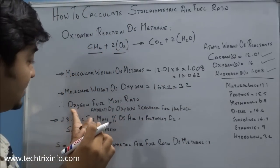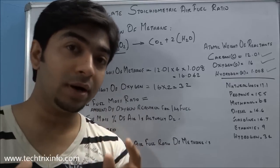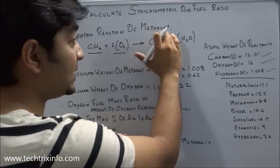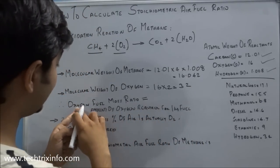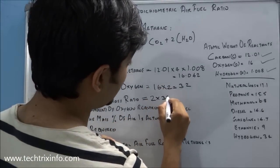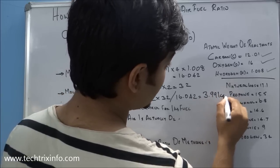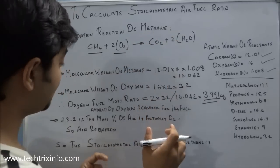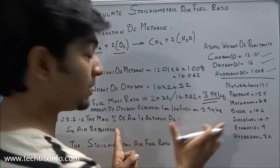Now we need to calculate the oxygen-to-fuel mass ratio — the amount of oxygen required to burn 1 kg of fuel. For methane, we have 2 molecules of oxygen in the reaction, so it is (2 × 32) / 16.042, which gives 3.99 kg. So 3.99 kg of oxygen is required to burn 1 kg of methane.